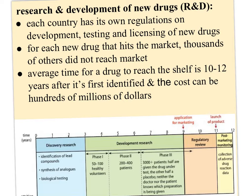Each country has its own regulations on development, testing, and licensing of new drugs. For each new drug that hits the market, thousands of others don't reach it. The average time for a drug to reach the shelf is 10 to 12 years after it's first identified, and the cost can be hundreds of millions of dollars. This chart shows how you go from discovery through development, into regulation, and then finally the market — the launch of the product — and then you have to do post-marketing monitoring and follow-up. So it's a never-ending process with drug development.